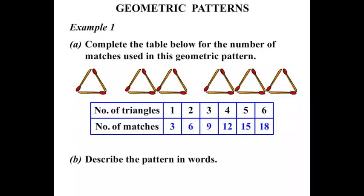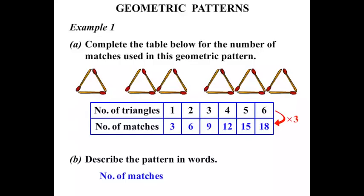Now we're asked to describe the pattern in words. If you look at these numbers — three, six, nine, twelve, fifteen, eighteen — they're all going up by three. We've got to work out the connection between the top numbers. If we times the top number by three: one times three makes three, two times three makes six, three times three makes nine, four times three makes twelve, five times three makes fifteen, six times three makes eighteen. So to go from top to bottom we multiply by three. The number of matches equals the number of triangles times three.